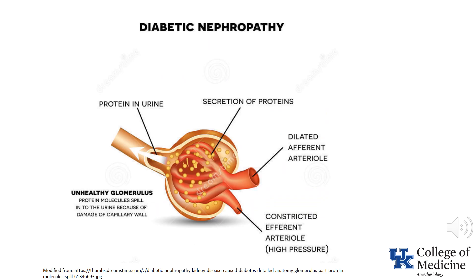Diabetic nephropathy is characterized by persistent albuminuria, usually defined as greater than 300 mg per day, that is present on at least two occasions separated by 3 to 6 months, progressive decline in glomerular filtration rate, and elevated blood pressure. It occurs with both type 1 and type 2 diabetes, and evidence suggests that effective treatment of diabetes delays or prevents the development of diabetic nephropathy.